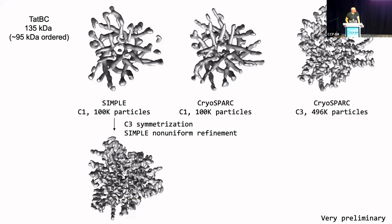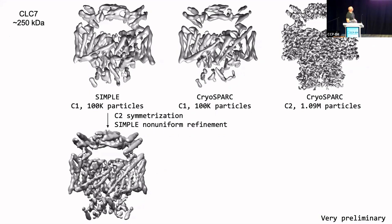This next result is very preliminary — my postdoc Cyril sent it to me yesterday. He started to do some benchmarks against CryoSPARC. This is another challenging membrane protein that Susan Lee loves to work with — 135 kilodalton, about 95 ordered. This is the 100,000 particles ab initio model from SIMPLE. This is from CryoSPARC — a CryoSPARC model from half a million particles. And this is C2 symmetrization in SIMPLE followed by non-uniform refinement of those 100,000 particles, and similar for CLC7. The CryoSPARC refinement used around a million particles, so we need to do more work, but I think it's pretty impressive to get that level of detail from 100,000 particles for such a challenging membrane protein.